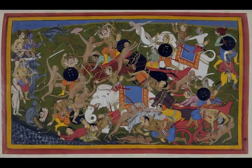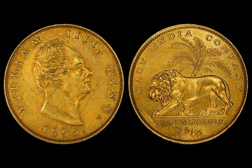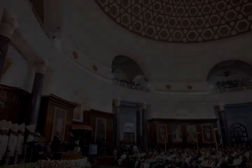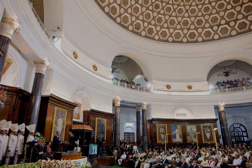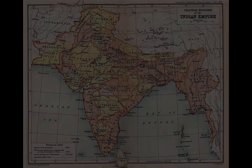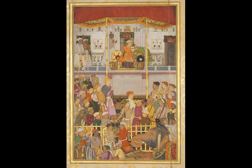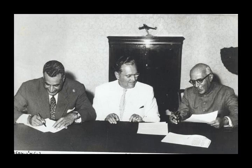Most of the earliest large sculpture is Buddhist, either excavated from Buddhist stupas such as Sanchi, Sarnath, and Amaravati, or in rock-cut reliefs at sites such as Ajanta, Karla, and Ellora. Hindu and Jain sites appear rather later. In spite of this complex mixture of religious traditions, the prevailing artistic style at any time and place was generally shared by the major religious groups. Gupta art, at its peak circa 300–500 CE, is often regarded as a classical period whose influence lingered for many centuries after; it saw a new dominance of Hindu sculpture, as at the Elephanta Caves.